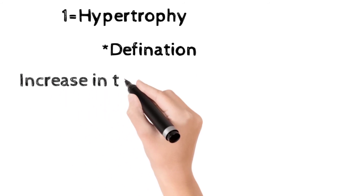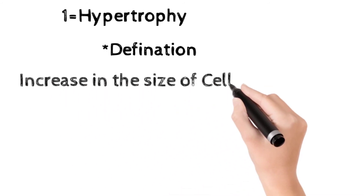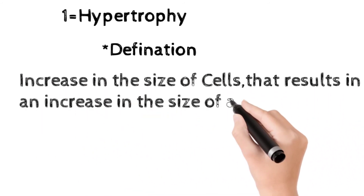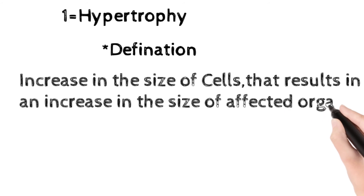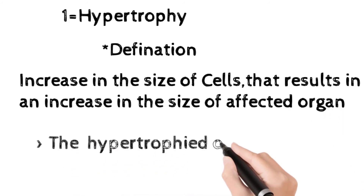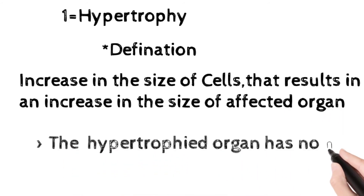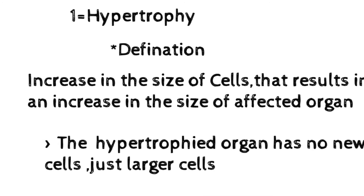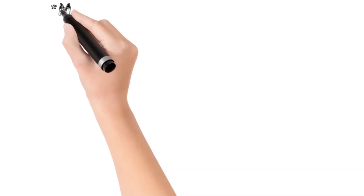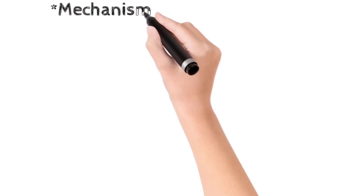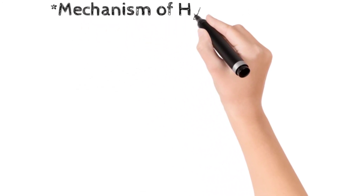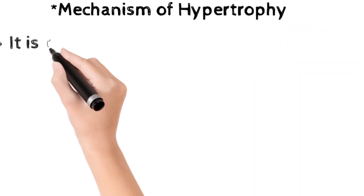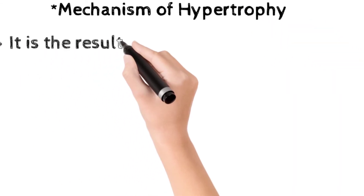First, the definition of hypertrophy: hypertrophy is an increase in the size of a cell that results in an increase in the size of the affected organ. The hypertrophic organ has no new cells — the already-present cells simply become larger in size. Now come to the mechanism of hypertrophy.